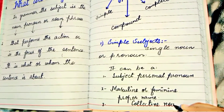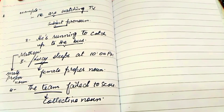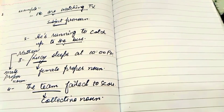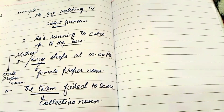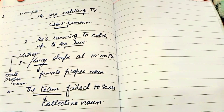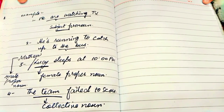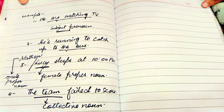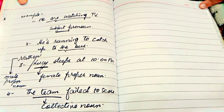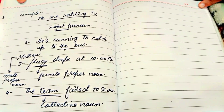Number three: we have collective nouns — a word that indicates more than one thing, talking about two or three things together. Examples: 'We are watching TV' — here 'we' is a subject pronoun. 'Lucy slept at 10 PM' — 'Lucy' is a feminine proper noun. 'Matthew slept at 10 PM' — 'Matthew' is a male proper noun. 'The team failed the score' — 'team' is a collective noun indicating a group.